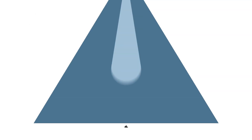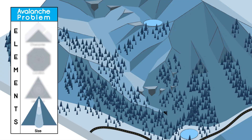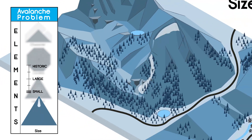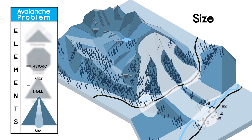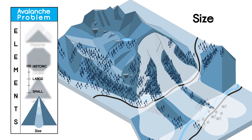Most avalanches are large when compared to a human, and all are dangerous if they are encountered in consequential terrain. Size is described using terms such as small, large, and historic. The size shown in a forecast is the largest expected avalanche.